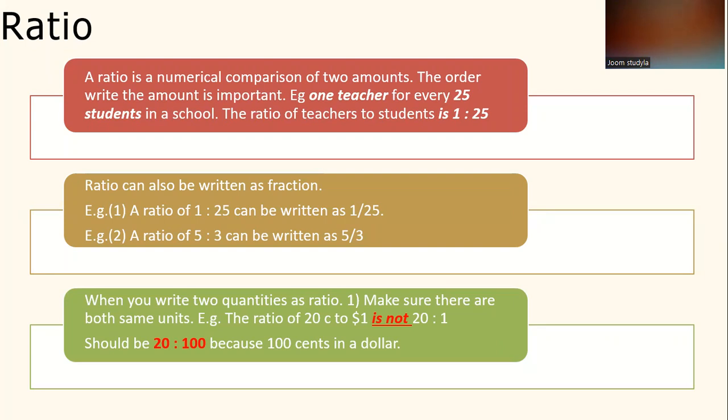When you write two quantities as a ratio, firstly, you have to make sure that they are both the same units. For example, the ratio of 20 cents to $1 is not 20 to 1. It should be 20 to 100 because there are 100 cents in a dollar.